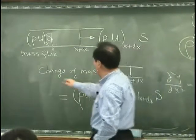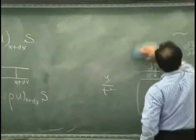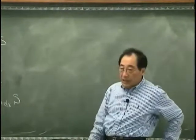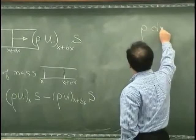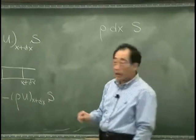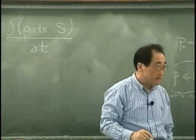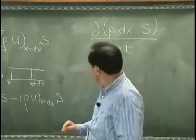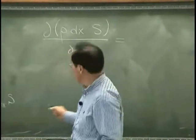So let's write down this part and this part in the expansion. Change of mass inside. What it is. The mass inside would be rho and then dx and then s. That is total mass. And I want to know rate of change of this mass with respect to time. That is equal to this.